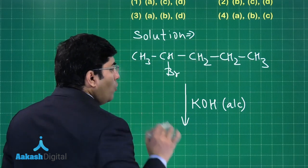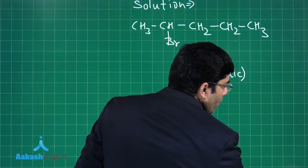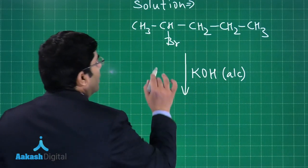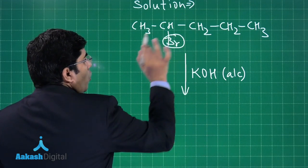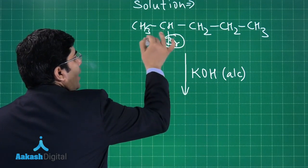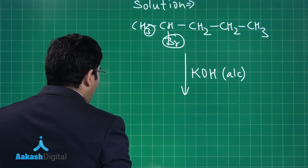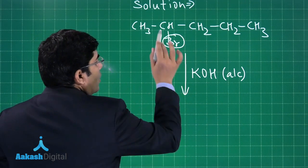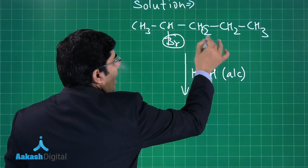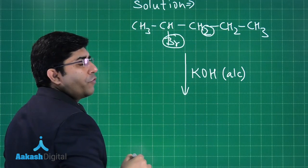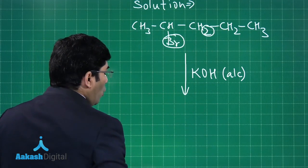There are two products possible. First possible product: if bromine goes out and hydrogen goes out from here, this is the first product. Second product is bromine from this carbon and hydrogen from this carbon. We have to take care of both of them.